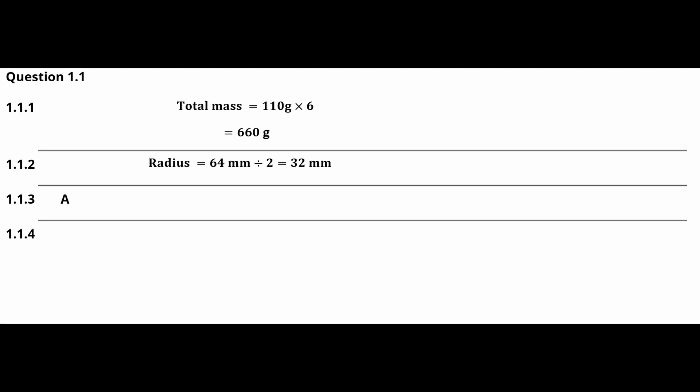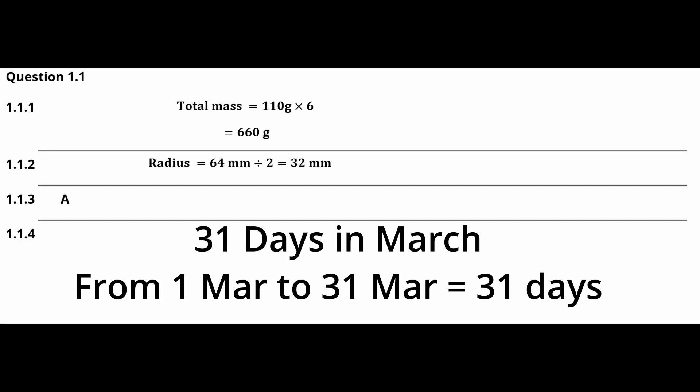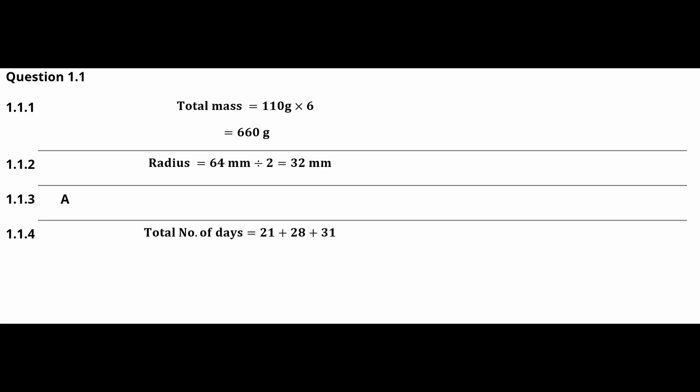So the total number of days is equal to 21 plus 28 plus 31, and this gives us a total of 80 days.